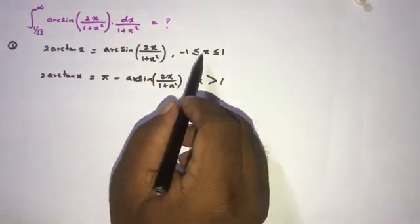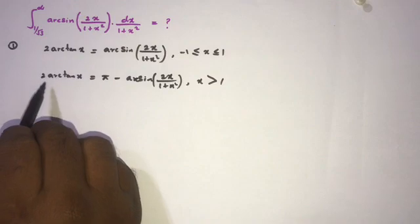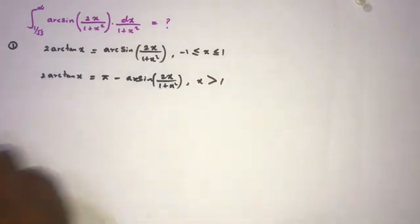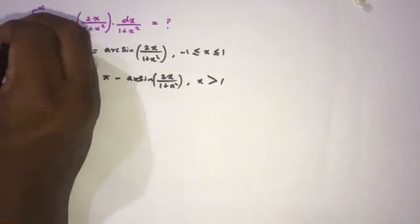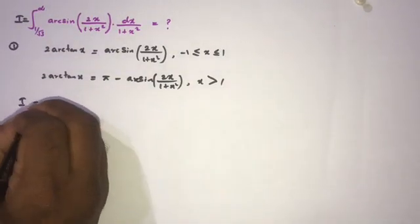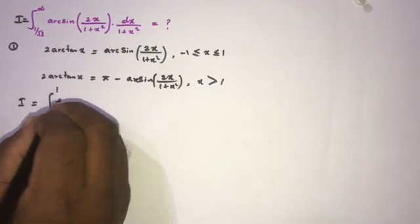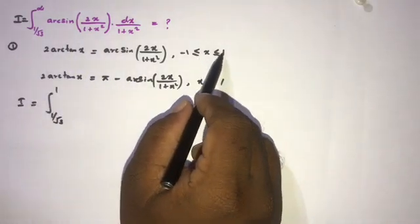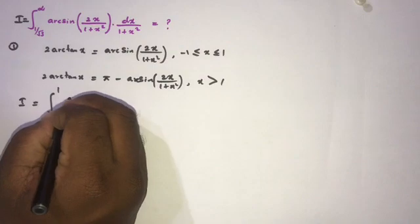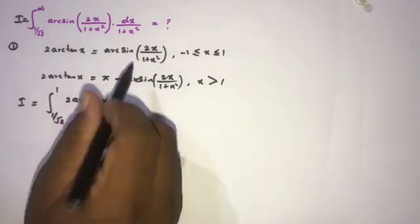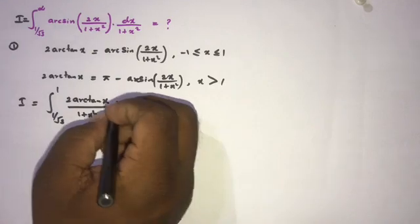So for x less than 1 we use 2·arctan(x), and for x greater than 1 we have 2·arctan(x) = π − arcsin(2x/(1+x²)). Therefore I am going to split the limits. We write I equal to the integral from 1/√3 to 1 of 2·arctan(x) times dx/(1+x²), and then add the second piece.